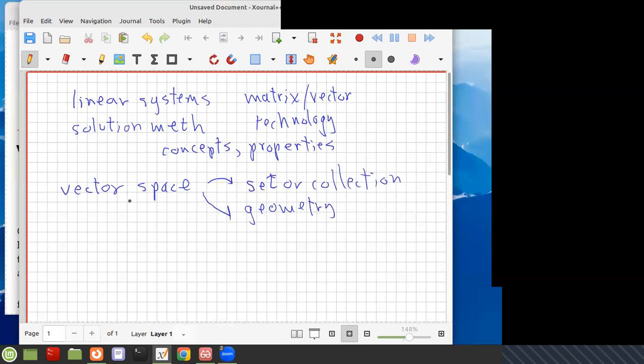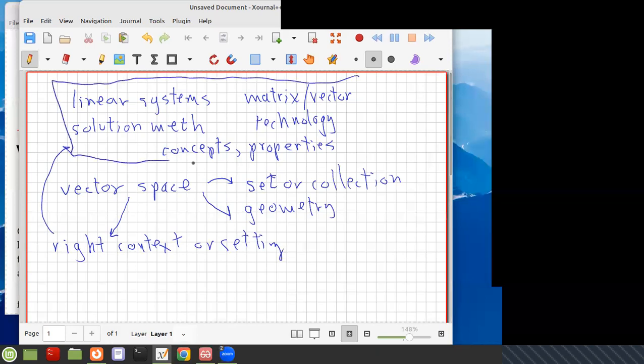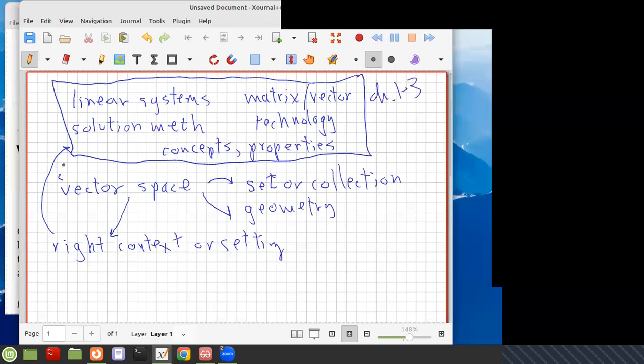So now what we're going to do first is we're going to approach this context in which we're going to see that this is a natural context for linear systems and all this other technology. This is the right context or setting for all the previous things that we've looked at before. These are chapters one through three, and now we're starting in Chapter 4, and this will continue for a while in chapters four and five.